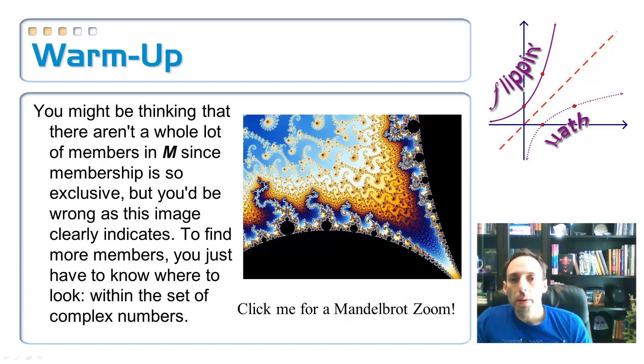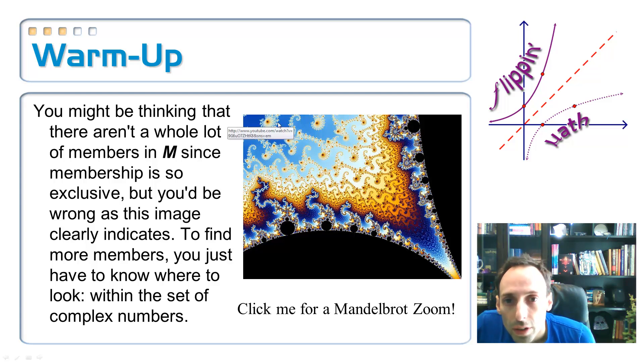So you might think that membership in the Mandelbrot set is really limited. As in, there can't be a lot of numbers that fit that bill, that it's got to be very exclusive. But if you take a look at this picture here, everything that's in black is a member of the Mandelbrot set. Even these little dots right in there. So you do have a lot more answers or a lot more members of this set. It's just that they're going to come within the complex numbers. This means imaginary numbers. And that's exactly what this lesson is about.